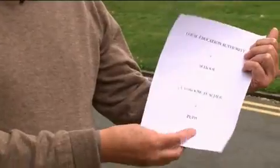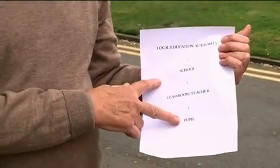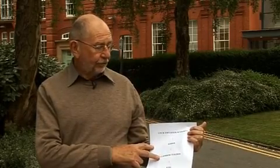So we would like to understand and partition the total variability between these different levels. For example, we might find that 70% of the variability is between pupils at level 1. 15% of the variability might be between classrooms or teachers at level 2. A further 10% might be between schools and a further 5% between local education authorities. By using multi-level modeling techniques, we can partition the variability in this way.